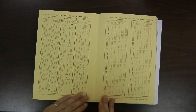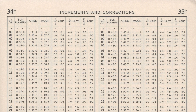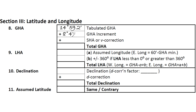Now we need to account for minutes and seconds, so we turn to the yellow pages of the Nautical Almanac towards the back of the book, labeled Increments and Corrections. In our example, our minutes were 35 and 9 seconds, so we turn to the page for 35 minutes, go down the table to 9 seconds, and note our GHA increment on the site reduction form. In this example, we see this is 8 degrees and 47.3 arc minutes. We note this on the site reduction form.